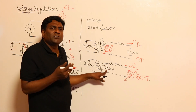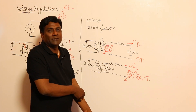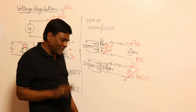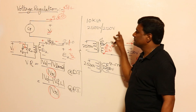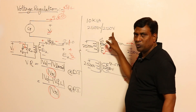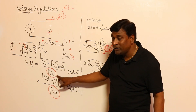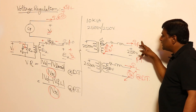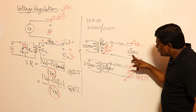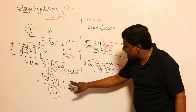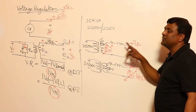In a distribution transformer, E2 equals the rated voltage and V2 is variable. In a power transformer, V2 is constant at rated and E2 is variable. In an exam question: if they give V2 and ask you to find E2, that is a power transformer — take V2 as rated. If they give E2 and ask you to find V2, that is a distribution transformer — take E2 as rated. You need not worry; the question itself will make it clear.